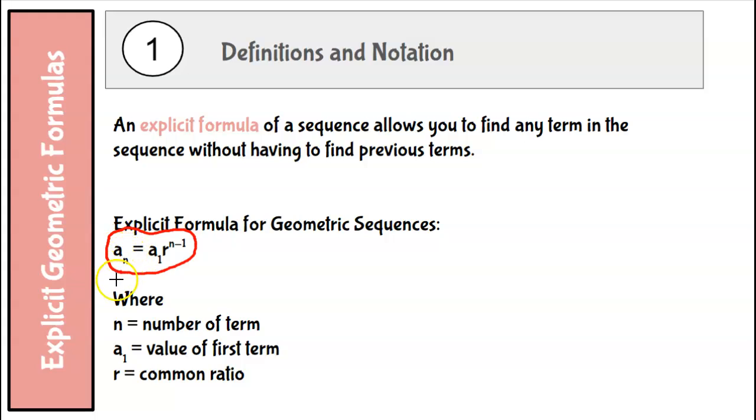A sub n just says this is the number of term that I'm trying to find. A sub 1 is the value of the first term. R is your common ratio. And then n minus 1 is always going to be n minus 1 in the formula.